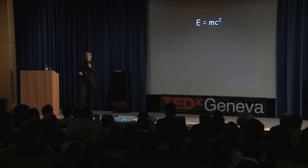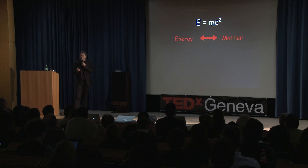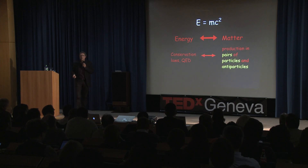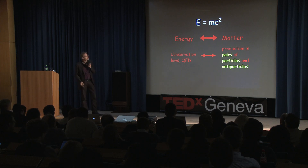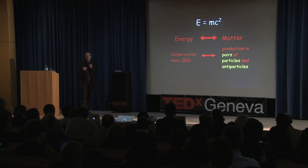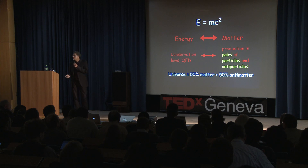So to understand what antimatter is — this is the only equation: E equals mc squared. Basically, all this says is that energy and matter or antimatter are just the same thing, two different forms of the same thing. What physics in the last century has figured out — conservation laws and quantum electrodynamics — says that every time you have this process happening, pairs of particles and antiparticles appear at the same time.